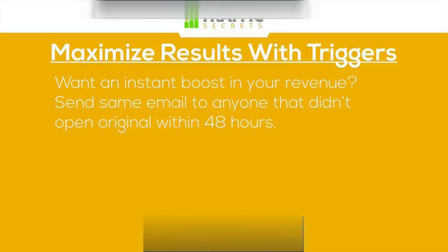Here's a way to get an instant boost in your revenue: you can send the same email to anyone that didn't open an original email within 48 hours. So if you send out a promotion email for one of your products or a sale you're doing, and your shopping cart or email marketing system allows it, look at all the people that haven't opened the email. Opens are tracked typically with HTML emails using a little pixel or graphic that loads. You can then send a follow-up — the same email again — to anyone that didn't open it the first time.